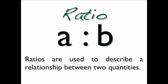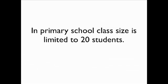A ratio is an ordered pair of numbers A to B that is used to describe a relationship between two quantities. In primary school, class size is limited to 20 students.